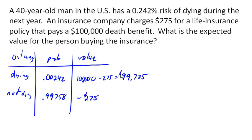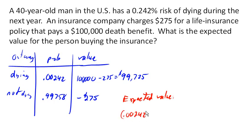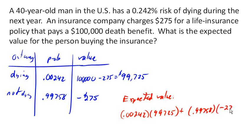So our expected value is the probability of dying multiplied by the value of that outcome, plus the probability of not dying times the value of its outcome. All together, that gives us a negative value of $33.